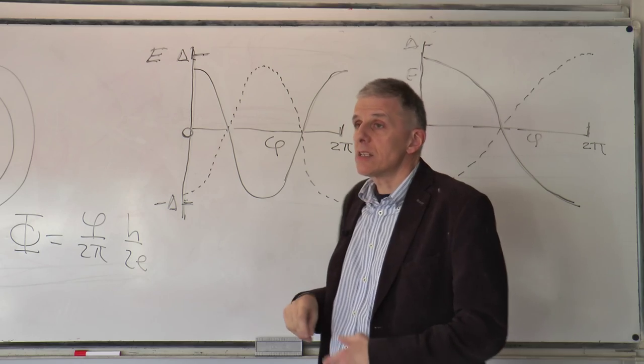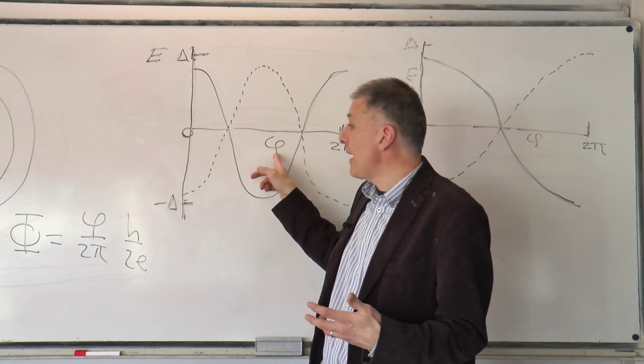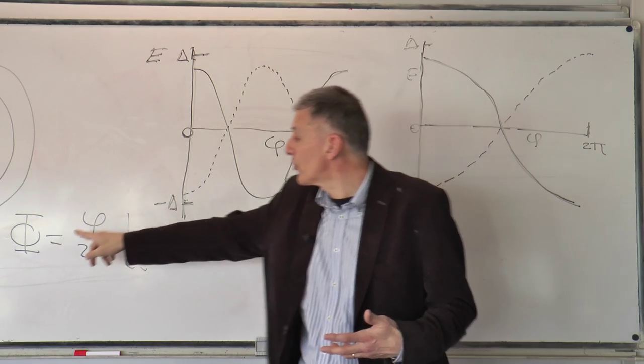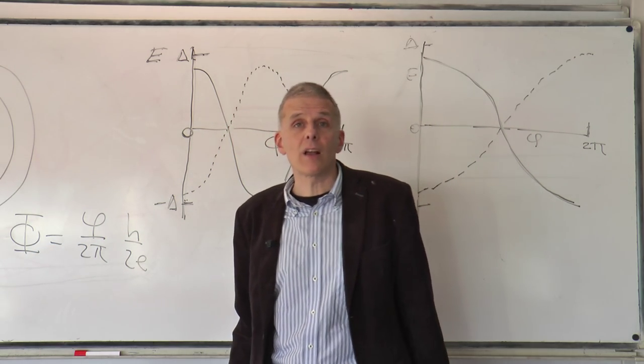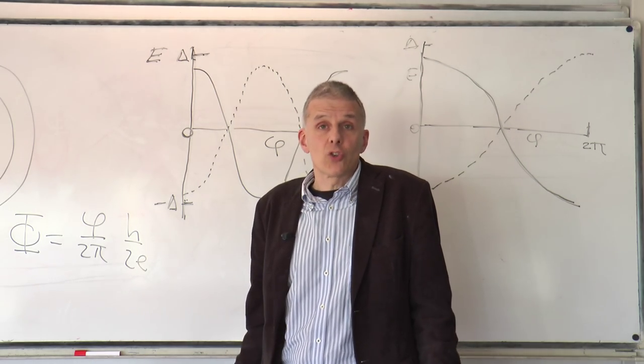So, in this particular case here, all the properties of this junction are periodic in the phase in units of two pi, or alternatively you could say they are periodic in the flux in units of h over two e, and that is how superconductors should behave.